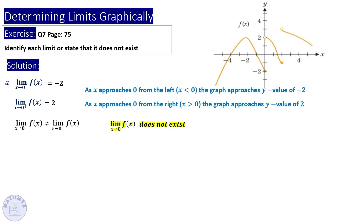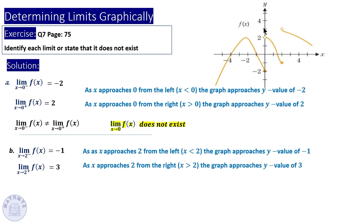Now try to investigate the limit around x = 2 — pause the video and check your answer. Around x = 2 from the left side, the values approach -1, while from the right side the function approaches 3. Since the left-side and right-side limits are different, the limit at x = 2 does not exist.